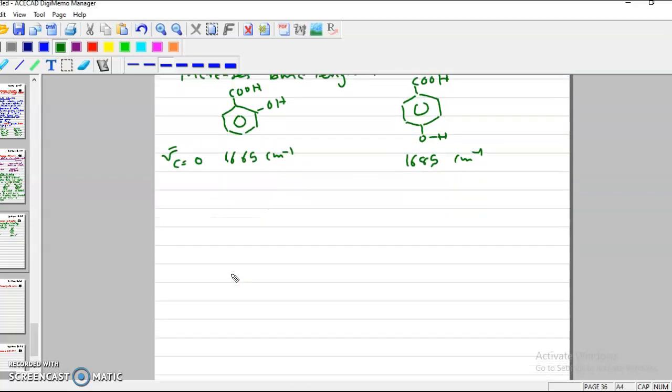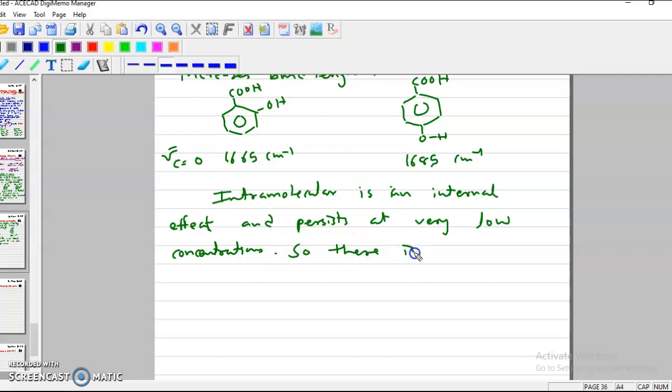So this is the effect of intramolecular hydrogen bonding. Now intramolecular hydrogen bonding is an internal effect, that is the effect within molecule and persists at very low concentration. So there is no effect on dilution. Intramolecular hydrogen bonding has no effect on dilution because it is within the molecule.